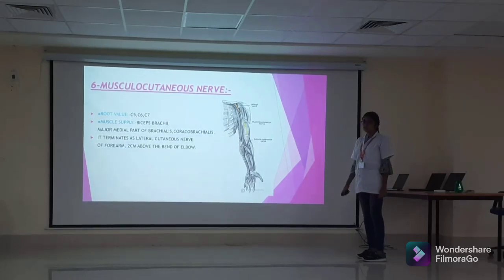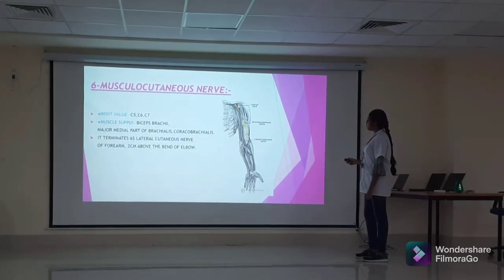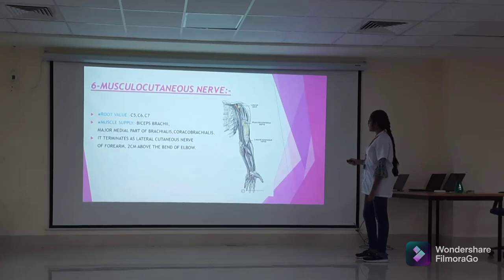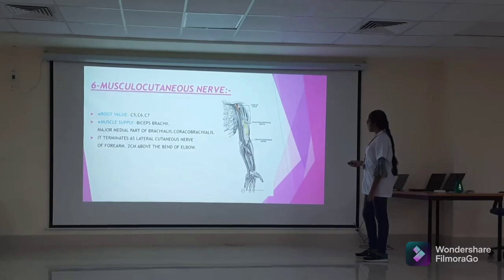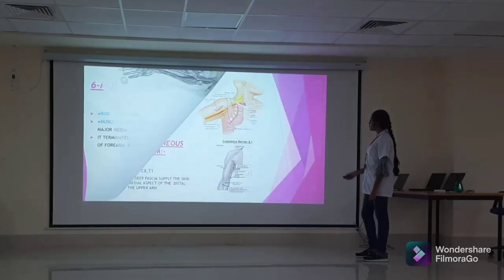The musculocutaneous nerve supplies the major part of brachialis, coracobrachialis, and the biceps muscle, and supplies the skin over the lateral aspect of the forearm as the lateral cutaneous nerve of the forearm.